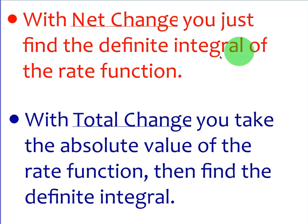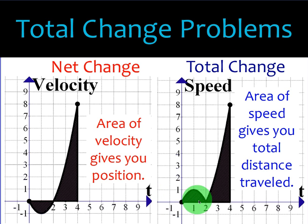With net change, you just find the definite integral of the rate function. So net change, keyword here, it's definite integral. But with total change, you take the absolute value of the rate function and then you find the definite integral. And by absolute value, graphically, we mean taking anything below the x-axis or t-axis and flipping it up.